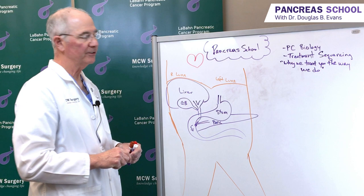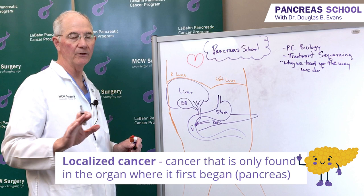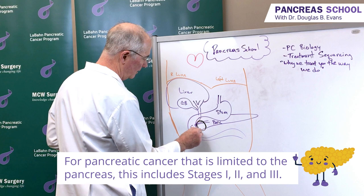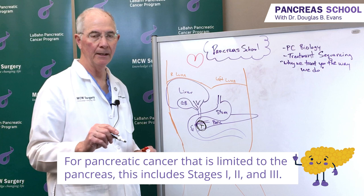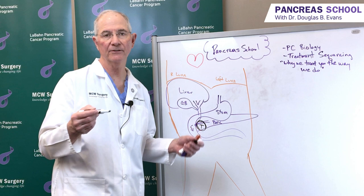This edition of Pancreas School is going to focus on treatment sequencing for patients whose tumors are localized to the pancreas - so at the time of diagnosis, we don't know that they've spread anywhere else. Our CT scan, MRI if it was done, and the PET scan show that all we have is the tumor here in the pancreas. The reason why pancreatic cancer biology is important is because pancreas cancer, like all solid tumors, has site-specific areas where it tends to spread.